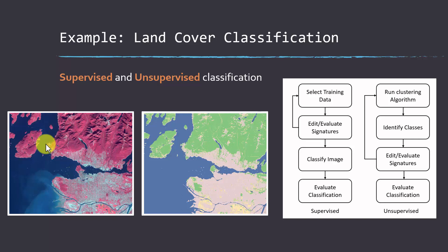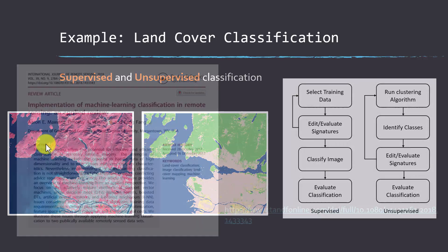In contrast, unsupervised classification doesn't rely on training samples. Instead, the computer uses an algorithm to cluster similar pixels or locations based on their values, such as image bands. Afterwards, the analyst manually categorizes those clusters into meaningful categories like land cover types. Both supervised and unsupervised classification require user input — the question is when. For supervised classification, user input happens at the beginning as training data; for unsupervised classification, it happens at the end when the analyst assigns clusters to meaningful categories. In this class we'll focus predominantly on supervised classification methods.